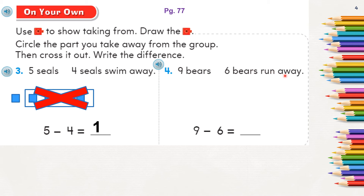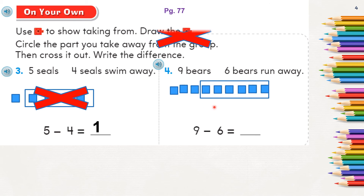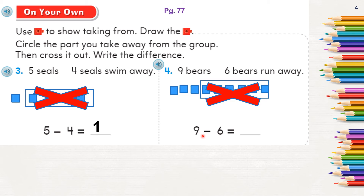Fourth question: nine bears, six bears run away. Draw nine counters: one, two, three, four, five, six, seven, eight, nine. Six bears run away, so draw six in a box and cross them out. Count how many bears are remaining: one, two, three. Complete the subtraction sentence: nine minus six equals three.